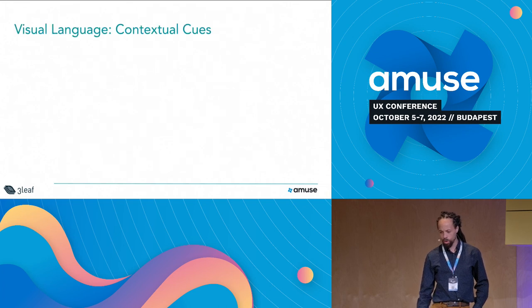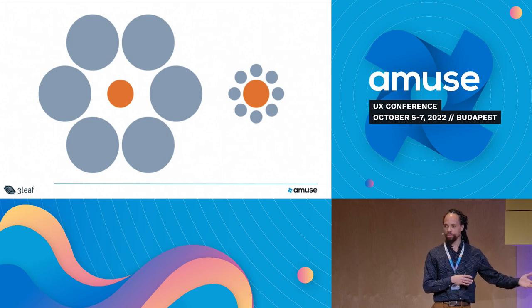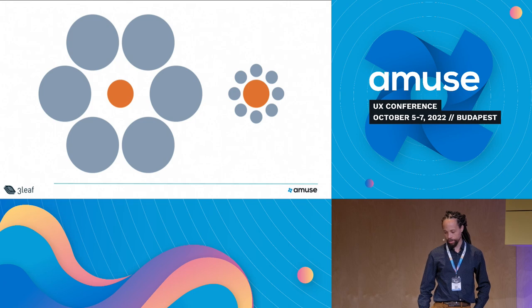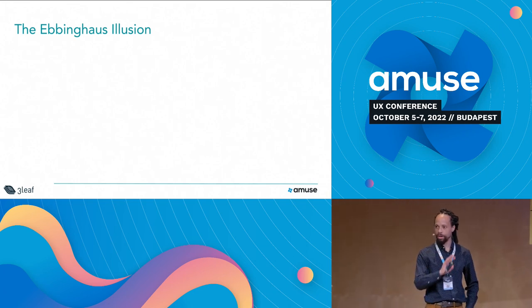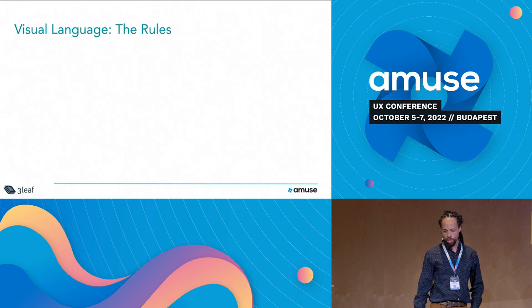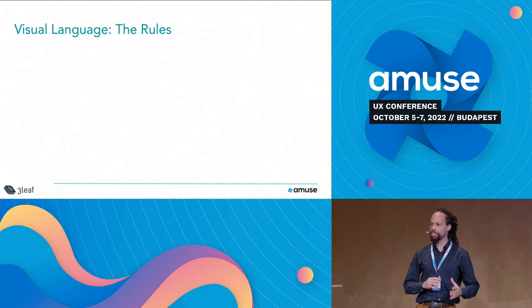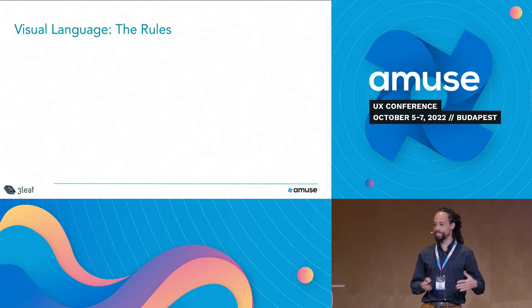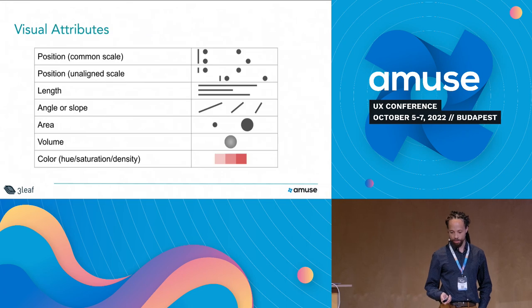The last one is contextual cues. These circles are the same size, although they look like two different sizes because of the contextual cues around them. This is a Gestalt effect called the Ebbinghaus illusion — the position of other things around an object can change the way we perceive it. I like to do these as demonstrations because you can prove to yourself that they're real. It's not just a lecturer telling you — you can see live that these effects come into play.